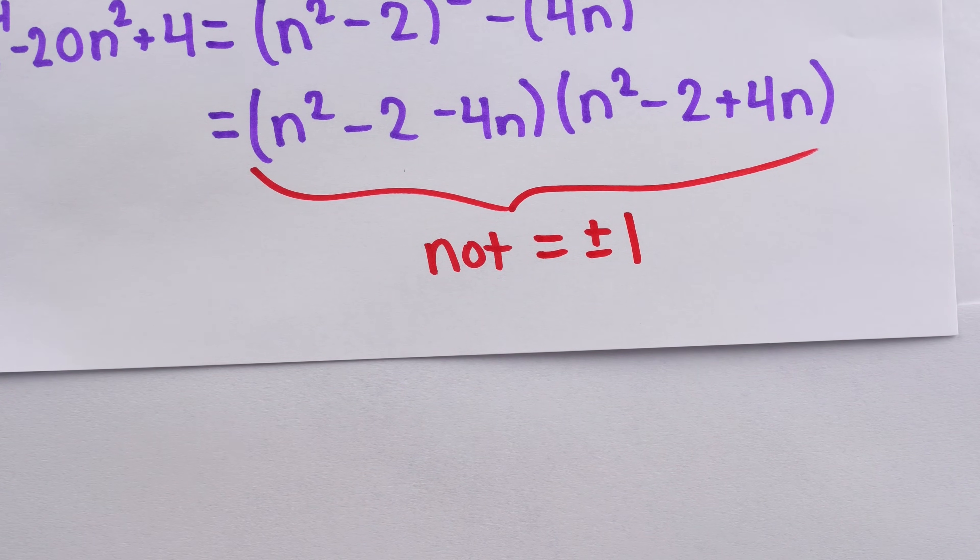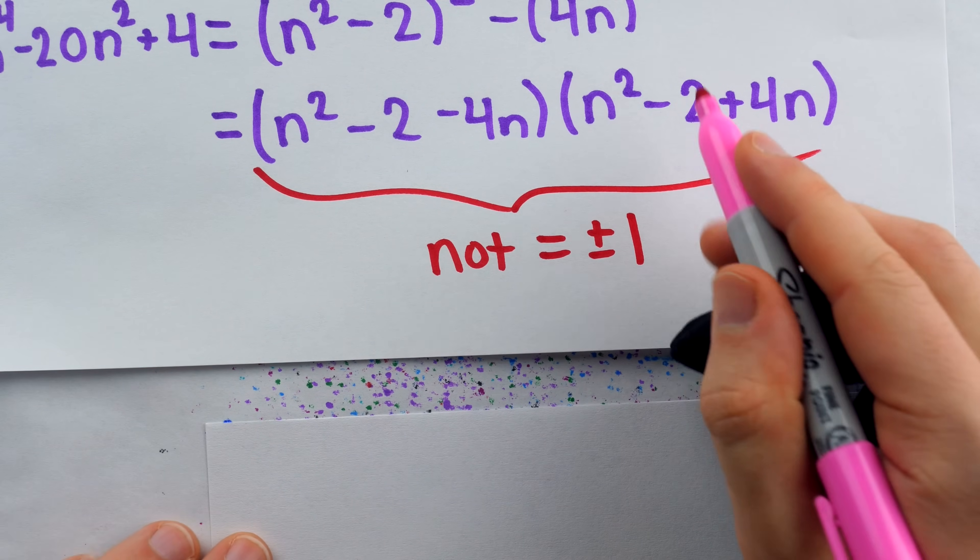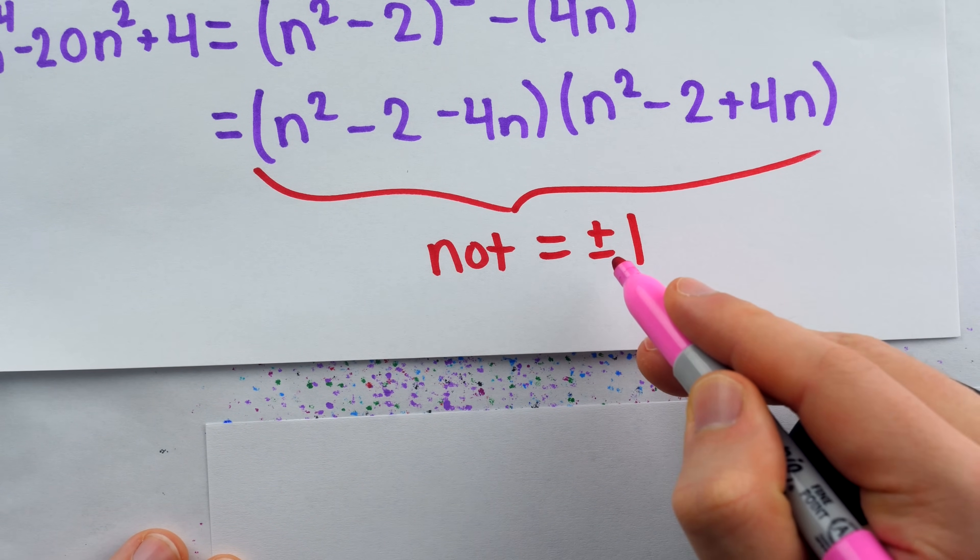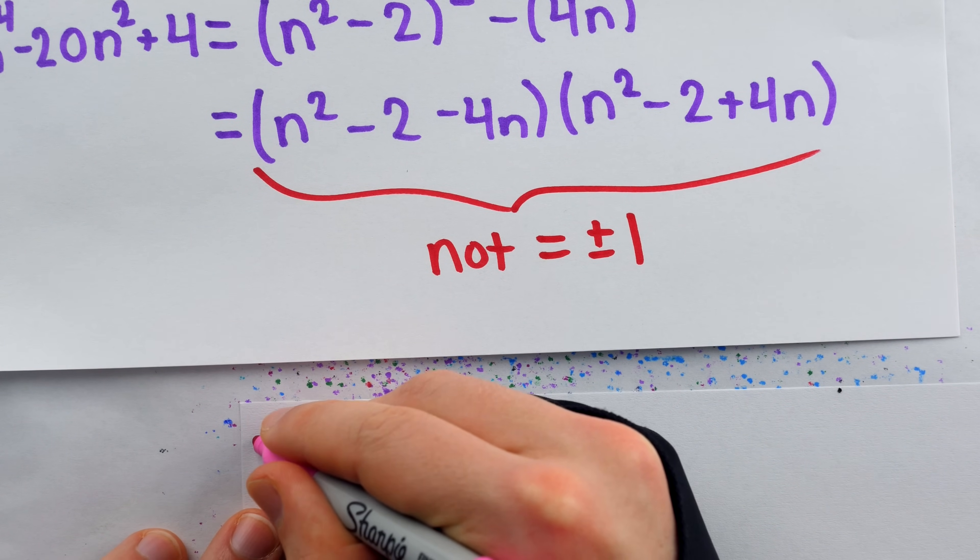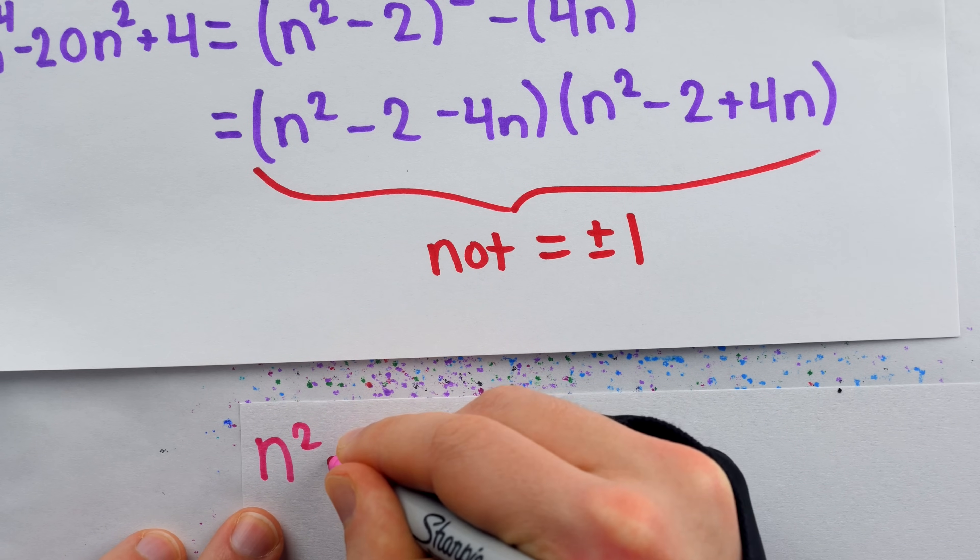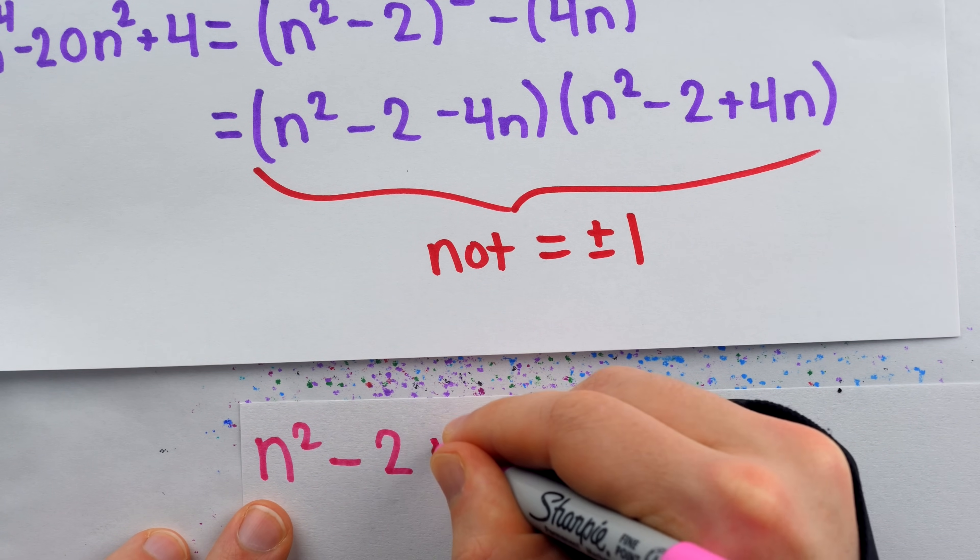And returning to our factorization, the argument is similar in the other cases. Just for one more example, let's show that this factor can't be negative 1. Again, we'll suppose that, on the contrary, it is equal to negative 1, and show this can't be the case.